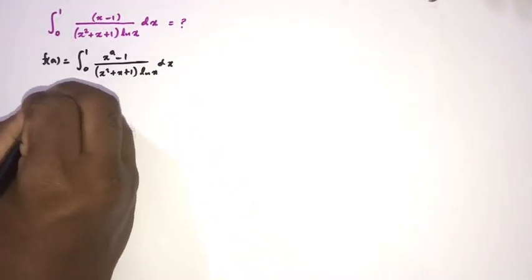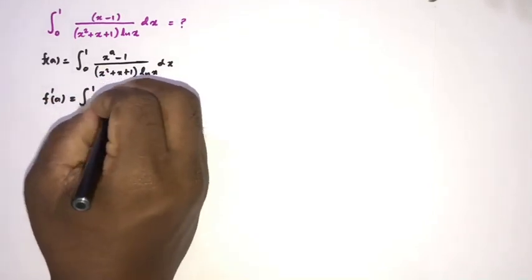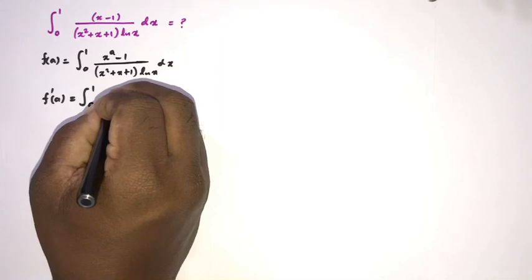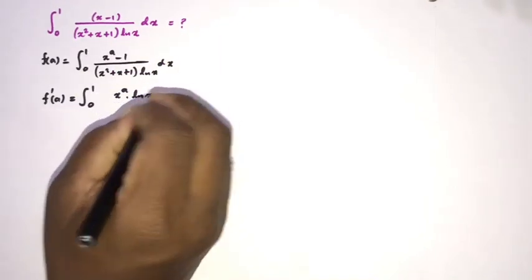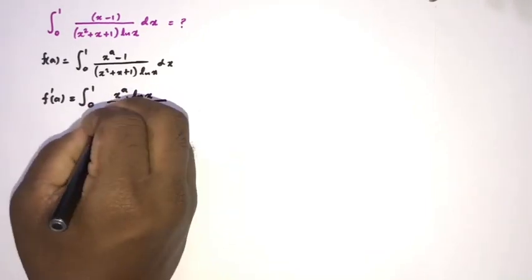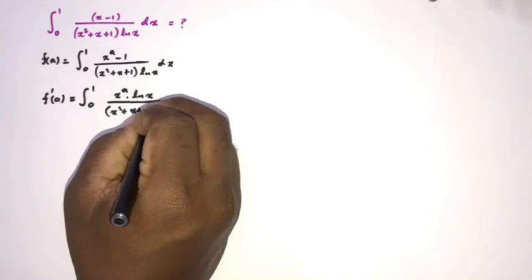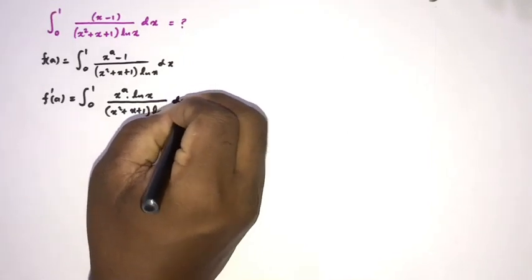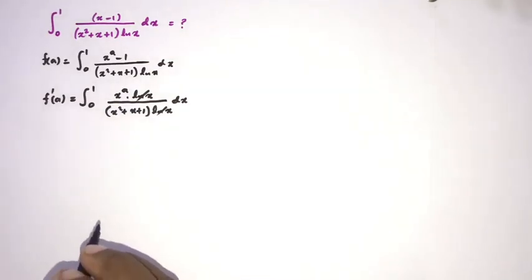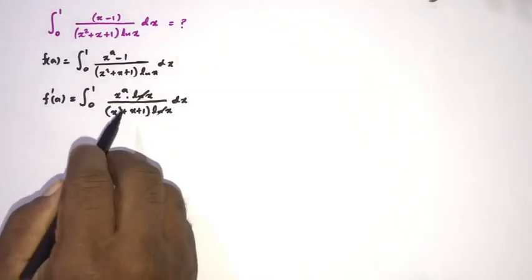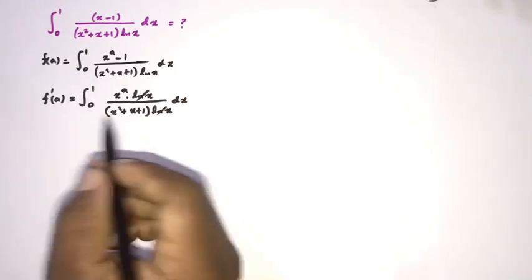f'(a) is equal to the integral from zero to one. We have x to the a times the natural log of x over (x squared plus x plus one) times the natural log of x, dx. The natural log of x cancels, so in the denominator we have x squared plus x plus one.